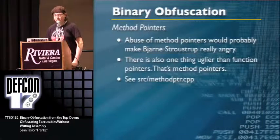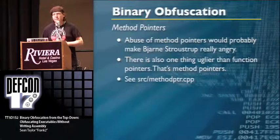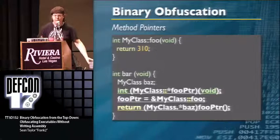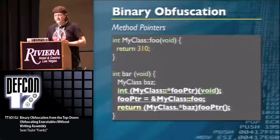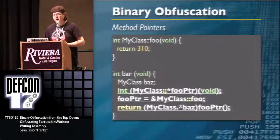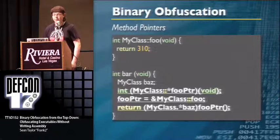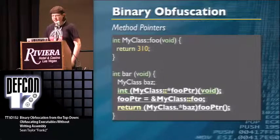Method pointers, however, are ugly as sin. They're function pointers for classes, but the syntax is absolutely annoying. The declaration hides foo_pointer beneath a mess of things: to the left in parentheses is the class name, then asterisk and foo_pointer. The assignment is foo_pointer equals ampersand MyClass::foo. And to actually call the method requires this stupid parentheses syntax.